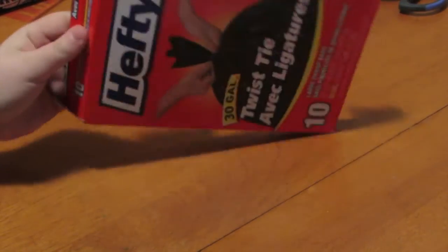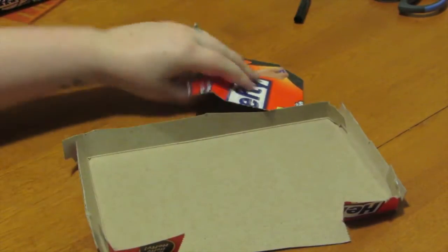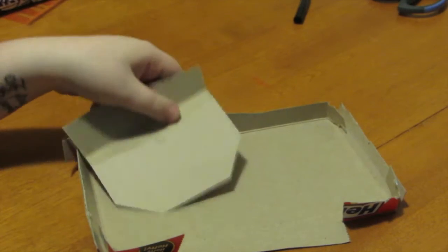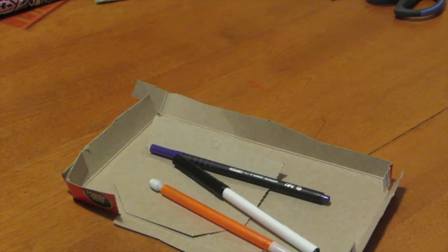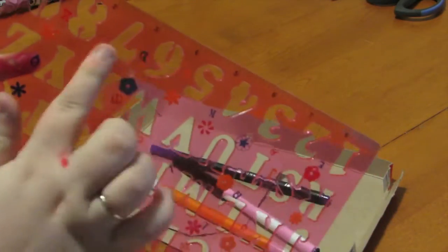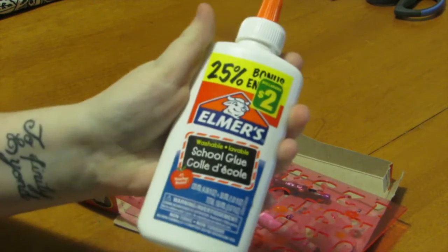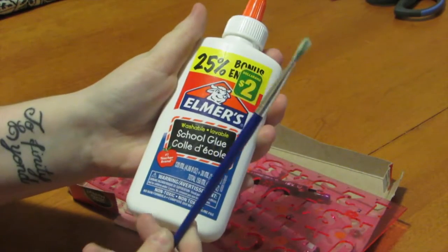You will need cardboard, I just happen to use some leftover cardboard from a package of garbage bags. Writing utensils, you definitely want a black marker and something you're not afraid to press down and score with. A ruler with both inches and centimeters as units of measure. Elmer's glue and a paintbrush.